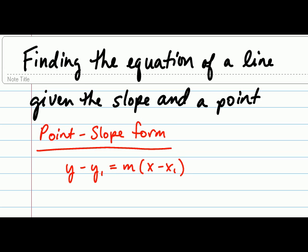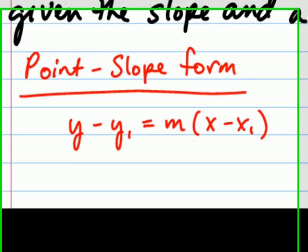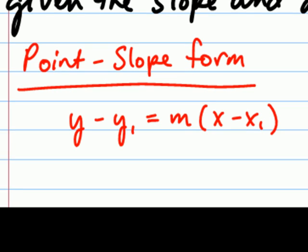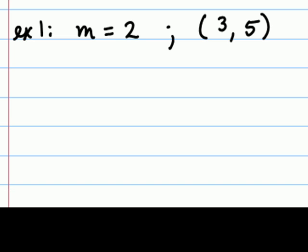To find the equation of a line given the slope and a point on the line, we're going to use the point-slope form: y minus y sub 1 equals m times x minus x sub 1. Let's look at an example.